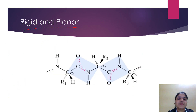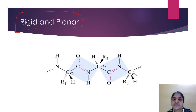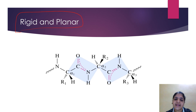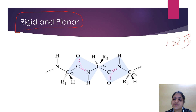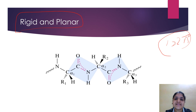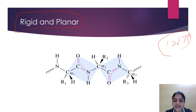The second characteristic: peptide bonds are rigid and planar. They are rigid because there is no freedom of rotation due to resonance and the partial double bond character. They are called planar because the six atoms of the peptide group all lie in a single plane.